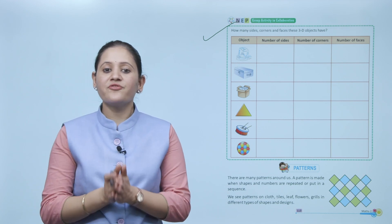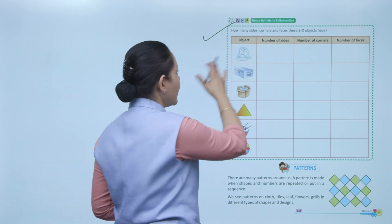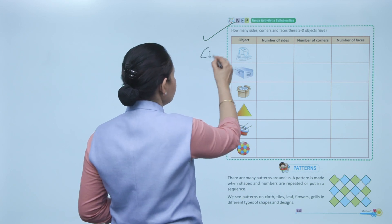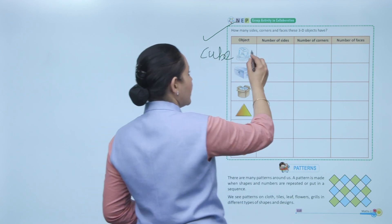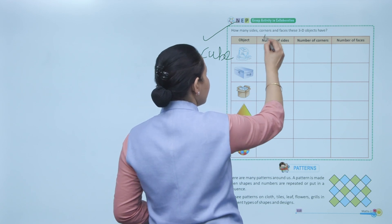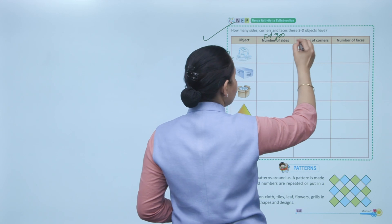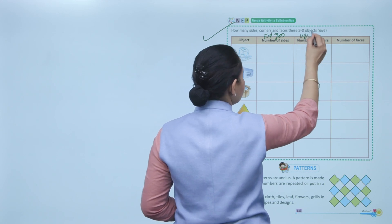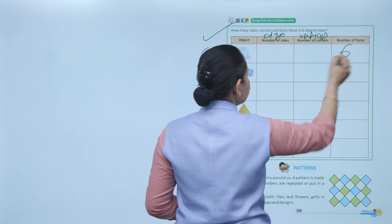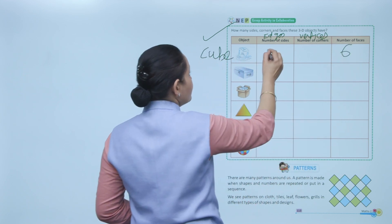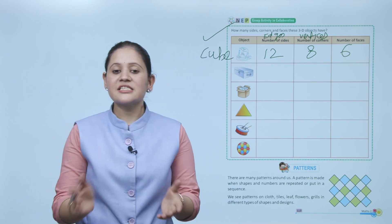Group activity: how many sides, corners, and faces do these 3D objects have? Here the object is an ice cube — shape is cube. Write the number of sides (edges), corners (vertices), and faces. It has six faces, twelve edges, and eight vertices.